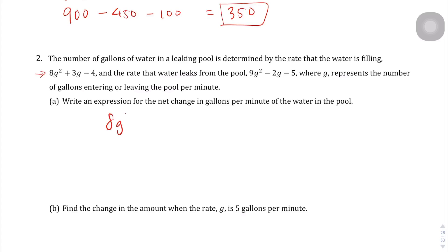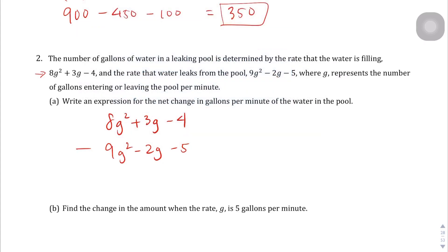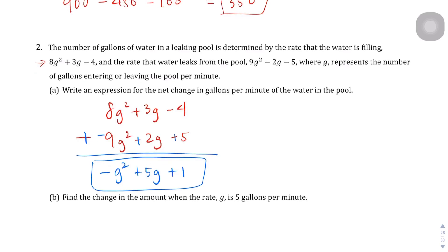For the first term we have 8g squared plus 3g minus 4, and the second one is 9g squared minus 2g minus 5. They want to know the difference, so we're going to subtract these — and when we do that again, we're going to add the opposite. So 8g squared minus 9g squared gives us negative g squared. 3g plus 2g gives us 5g. Negative 4 and positive 5 gives us positive 1. So the expression for the net change in gallons per minute is negative g squared plus 5g plus 1 — we're actually losing more water than we're gaining.